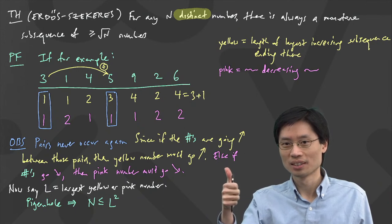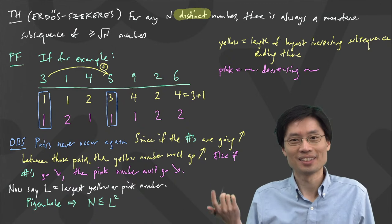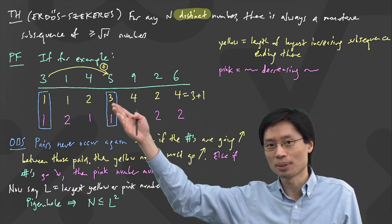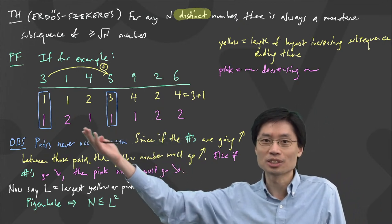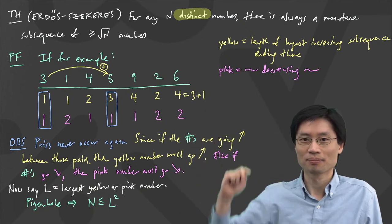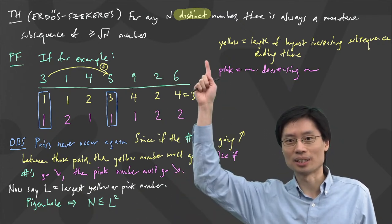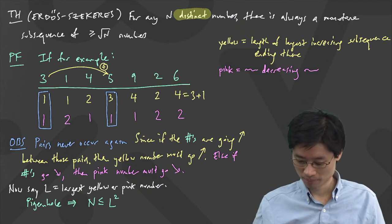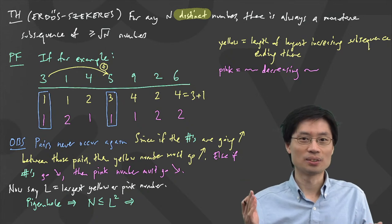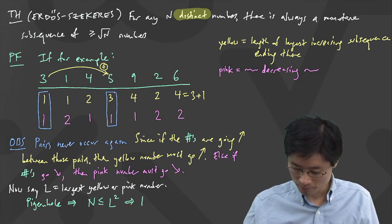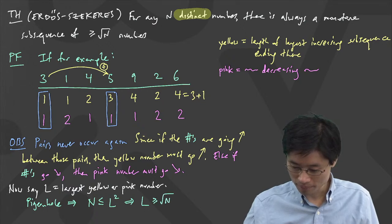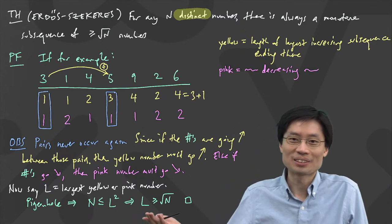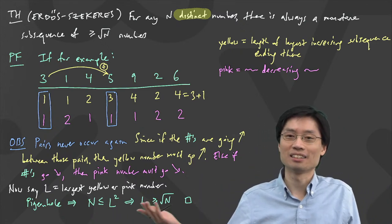If n ≤ L², what does that say about L? A student answers: L is bigger or equal to root n. And that's exactly what we wanted. L ≥ √n — just take the square root of both sides: √n ≤ L. Done. That's the entire proof. It fits here. It's nice to think of it in terms of this pigeonhole principle idea — that's actually the cleanest proof I often use.